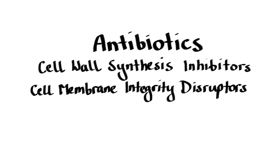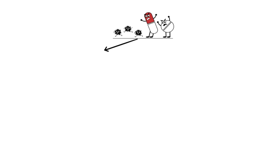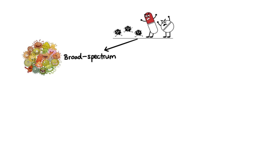Antibiotics are broadly defined as chemical agents that kill or inhibit the growth of microorganisms. Antibiotics may be classified as broad spectrum, meaning they act against a wide range of microorganisms, or as narrow spectrum, meaning they act against very few types of microorganisms.